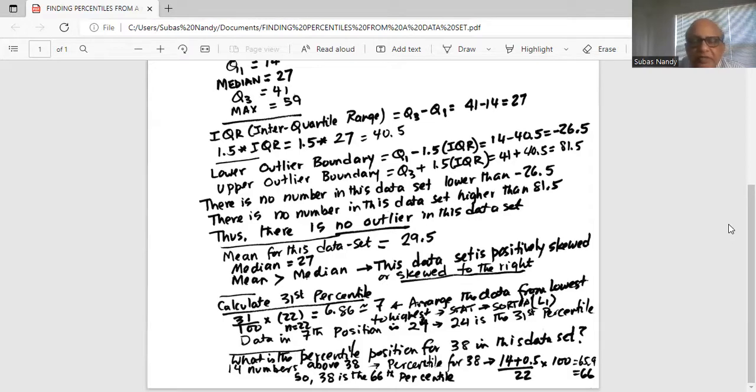22 is the total number of data points. So 14.5 divided by 22 multiplied by 100 is 65.9, which we round up to 66. That means 38 is in the 66th percentile position. That means 66% of the data are below 38, 66% below 38 and 34% above 38.